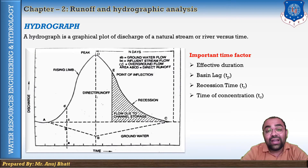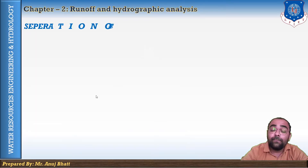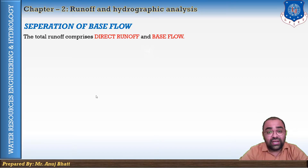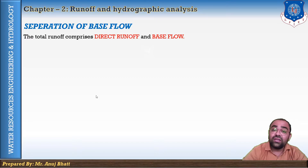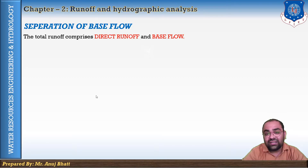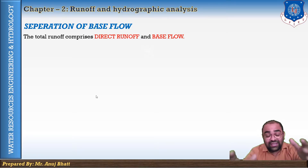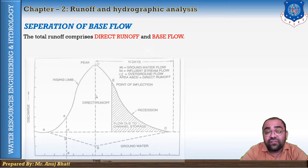The next topic is the separation of base flow. The total runoff comprises direct runoff and base flow. Direct runoff is the water which reaches the river shortly after it falls as rain — generally known as overland flow or surface runoff. A hydrograph that represents direct runoff is called the direct runoff hydrograph, shown as the area under the curve from A to D to E. The area under this hydrograph gives the direct runoff volume.